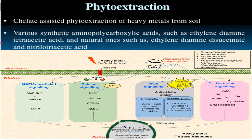Phytoextraction means chelate-assisted phytoextraction of heavy metals from the soil. Various synthetic amino polycarbonic acids such as ethylene diamine tetraacetic acid (EDTA), and natural ones such as ethylene diamine disuccinate and nitrilo triacetic acid, are used to extract heavy metals through phytoextraction.